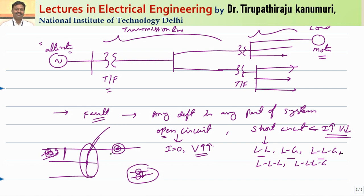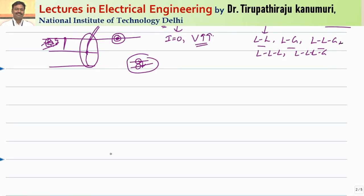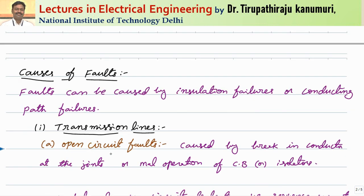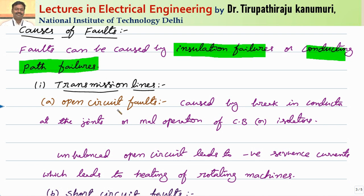That is why generally re-closure of the circuit breaker is done to check whether the fault is permanent or temporary. This type of thing is not done in the case of cables or alternators. So the faults can be caused either by insulation failure or conducting path failure. Conducting path failure means the conductor is broken; insulation failure means the conductor is touching ground or another phase.